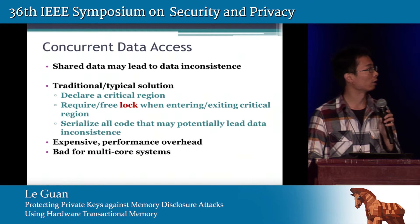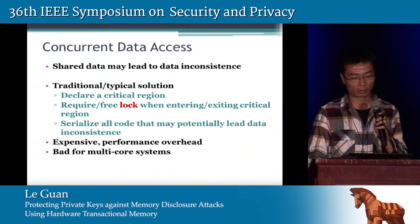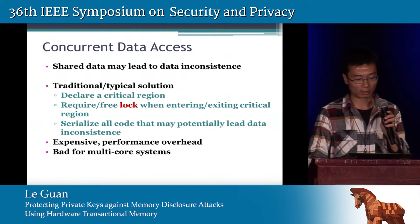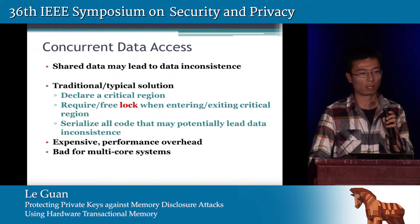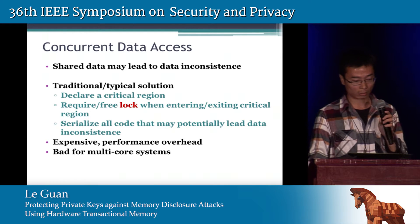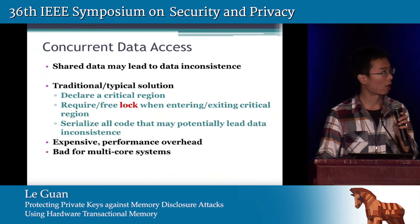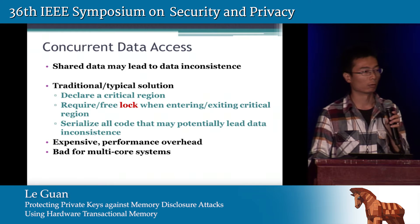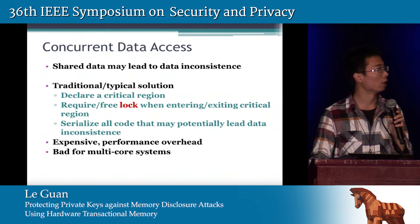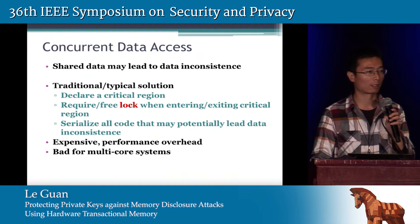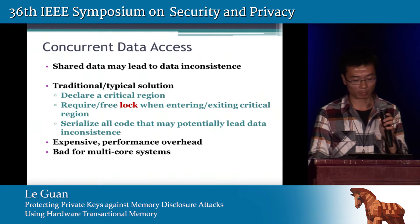Before we talk about the technical details of our solution, let's first discuss some technical background. In multi-threaded programming, shared data often leads to data consistency issues. As a typical solution, a programmer needs to declare a critical region and acquire or release the lock when entering or exiting the region. But the result is that all the code that may potentially access the shared data will be serialized, which is a big performance overhead, especially for multi-core systems.